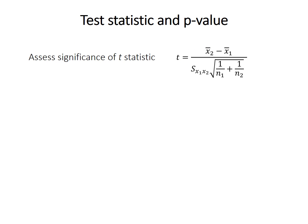This formula — the signal-to-noise ratio of the difference in means divided by the pooled standard error — is called the t-statistic.